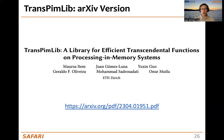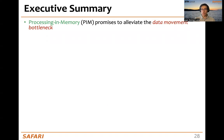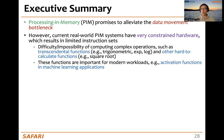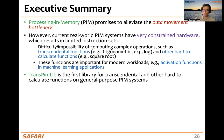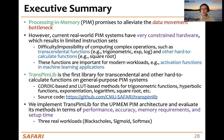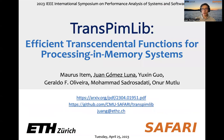You can check more details in the preprint version of our paper, and the source code is publicly available in our repository. To conclude: processing in-memory is promising to alleviate the data movement bottleneck, but it is hardware-constrained, limiting the instruction set and making it difficult or impossible to compute complex operations such as transcendental functions important for modern workloads. TransPIMLib is the first library for transcendental and other hard-to-calculate functions on general-purpose PIM systems, containing CORDIC-based and LUT-based methods, with publicly available source code. If you want to learn more about real-world PIM architectures, I recommend joining the ISCA tutorial we will organize this year. Thank you very much for your attention.